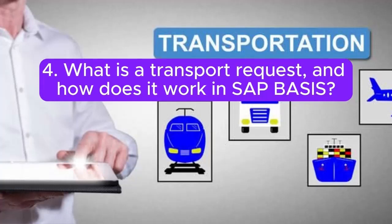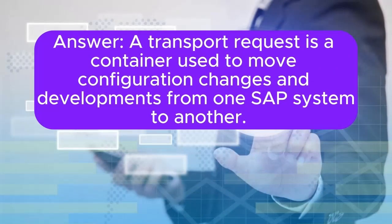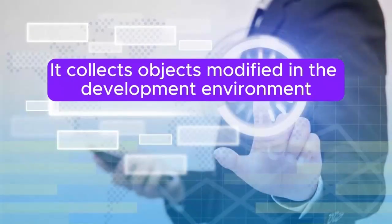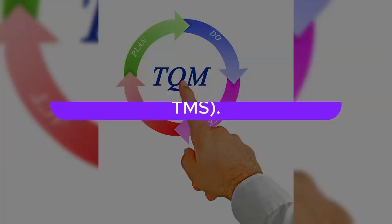Question 4: What is a transport request and how does it work in SAP BASIS? A transport request is a container used to move configuration changes and developments from one SAP system to another. It collects objects modified in the development environment and transports them to QA and Prod environments using the Transport Management System (TMS).